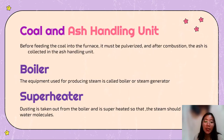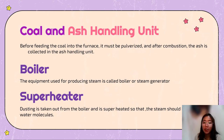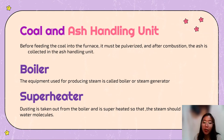The first one is the coal and ash handling unit. Before feeding the coal into the furnace, it must be pulverized, and after combustion, the ash is collected in the ash handling unit. The boiler: the equipment used for producing steam is called the boiler or the steam generator. The next one is the superheater: the steam is taken out from the boiler and is superheated so that the steam is free from water molecules.